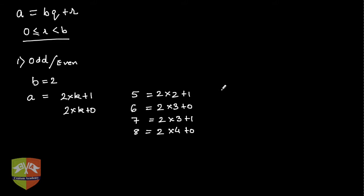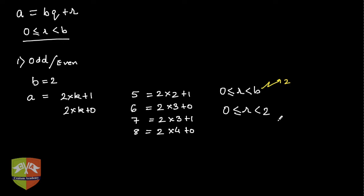Hence, for any natural number, the choices of remainder are only 2, because we know 0 is less than or equal to r, which is less than b. In this case b is 2, so r is greater than or equal to 0 and less than 2 — only two possibilities: r is 0 or r is 1.